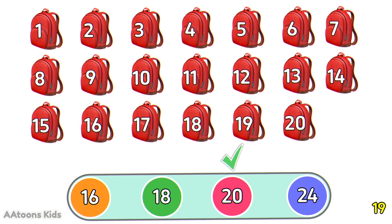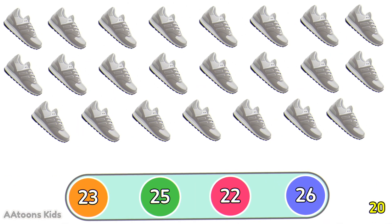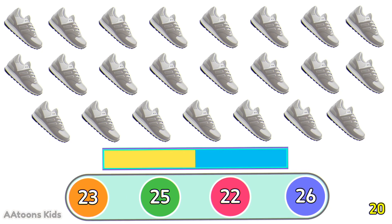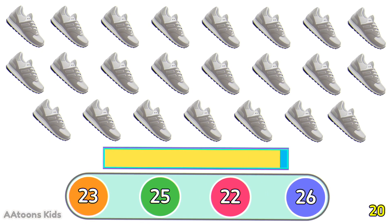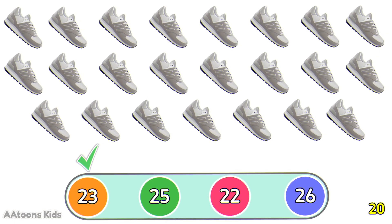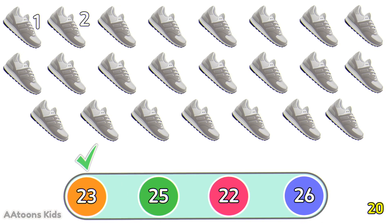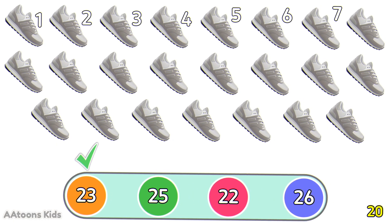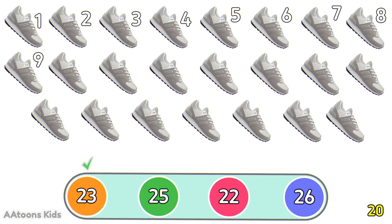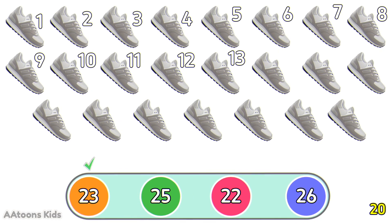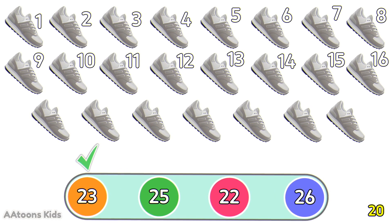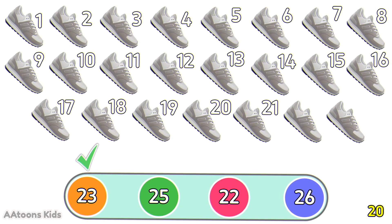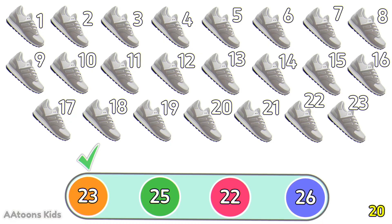Can you count how many shoes are in the picture? 23 shoes. Let's count them: 1, 2, 3, 4, 5, 6, 7, 8, 9, 10, 11, 12, 13, 14, 15, 16, 17, 18, 19, 20, 21, 22, 23. 23 shoes.